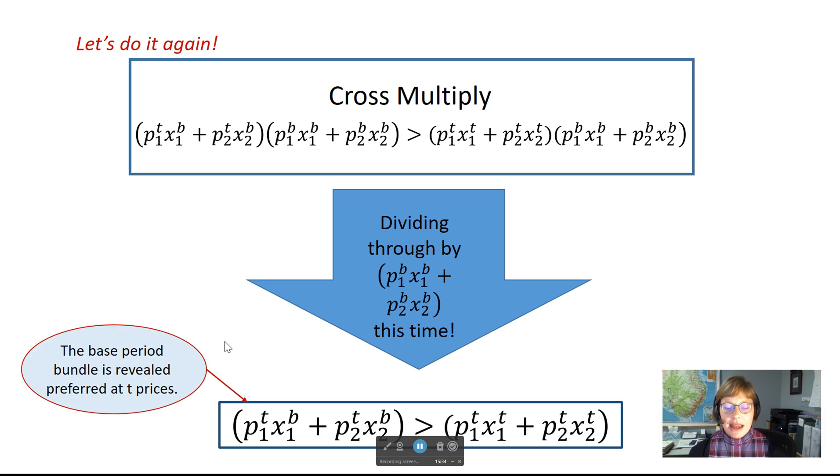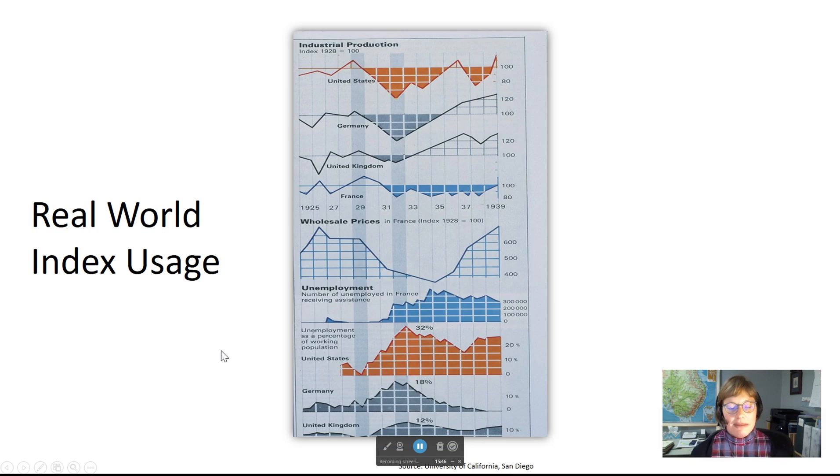You will find indexes in a number of different studies and used in a number of different ways throughout the economics literature. As I mentioned earlier, price indexes can be used within a nation to determine the effects of price changes on different groups. One group that is closely monitored is the elderly, as they often receive a fixed income from Social Security and other pension plans. On pages 135 and 136 of the Varian textbook, the author discusses using price indexes to adjust pension plans for the elderly. It is very valuable to understand the indexing processes.